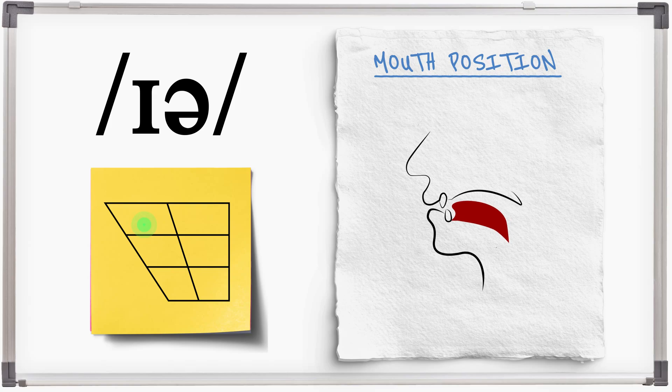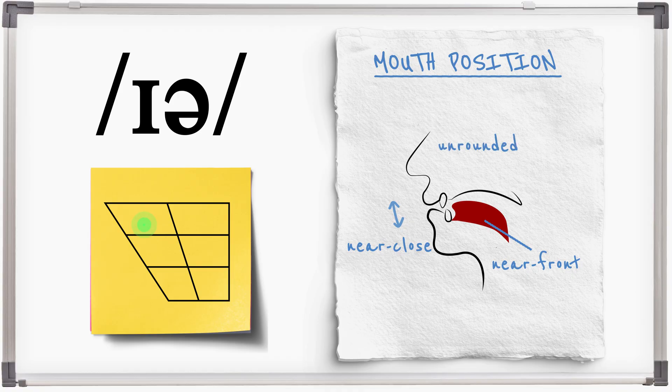Ear is a long vowel sound made with the tongue near front, the jaw near close and the lips unrounded. It is generally pronounced in this monophthongal way these days without the movement to the centre, but the phoneme is a centring diphthong and if it is pronounced in this way it starts near front near close and moves to the centre.